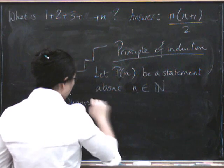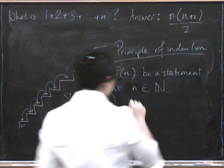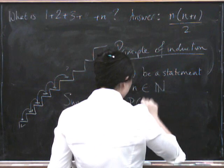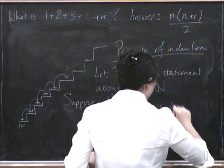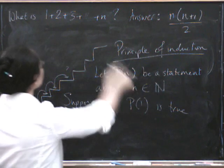Suppose, first of all, that the statement P of 1 is true. So suppose that P of 1 is true. So in the example we just did, P of n was the statement...